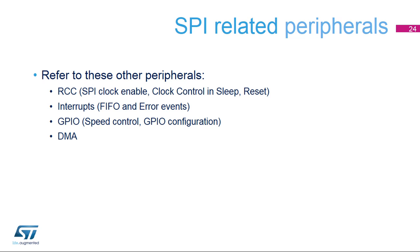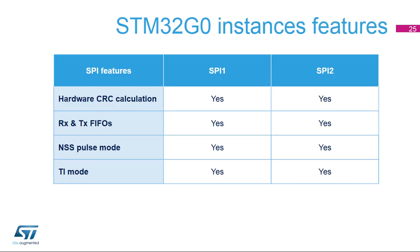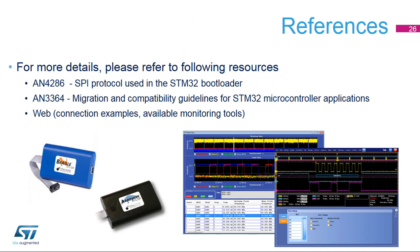Refer to these other trainings which are linked directly to the SPI. Users should be familiar with all the peripherals that can affect the behaviour of the SPI. There are two SPI instances within the STM32G0 microcontroller, and each supports all the features described in this presentation. There are some dedicated SPI application notes. To learn more about general SPI connections and interface issues, there are many web pages as well as SPI bus monitoring tools available. Many digital oscilloscopes support direct reading and analysis of data and clock signals on the SPI bus.